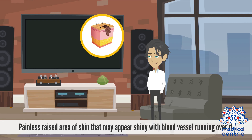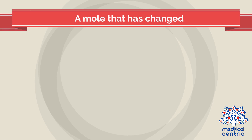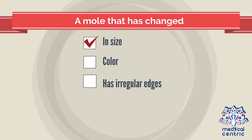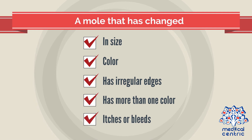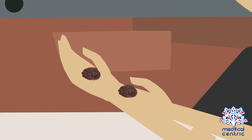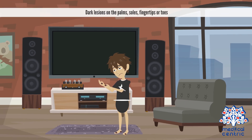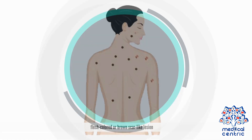Symptoms of skin cancer include: a painless raised area of skin that may appear shiny with blood vessels running over it; a hard lump with a scaly top; a mole that has changed in size or color, has irregular edges, has more than one color, or itches or bleeds; dark lesions on the palms, soles, fingertips, or toes; and a flat flesh-colored or brown scar-like lesion.